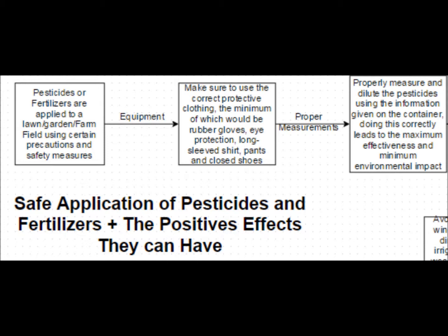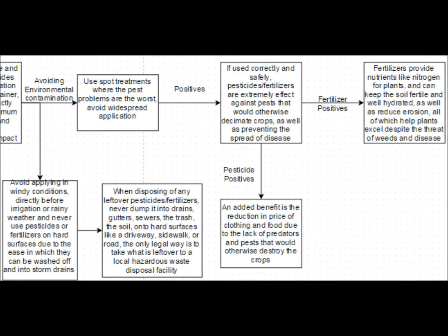Also, you must first properly dilute the chemicals before use. The containers they come in all have the needed information on them as to how much you should use and how diluted it should be to maximize effectiveness and minimize environmental impact. To avoid environmental contamination, spot treatments should be used so that it is not a general application throughout the entire area. Also, avoid applying in windy conditions, directly before irrigation or rainy weather, and never use pesticides or fertilizers on hard surfaces due to the ease that they can be washed off and into storm drains. When disposing of any leftover pesticides and fertilizers, never dump them into drains, gutters, sewers, the trash, soil, or hard surfaces, because the only legal way to dispose of them is to bring them to a local hazardous waste disposal facility.